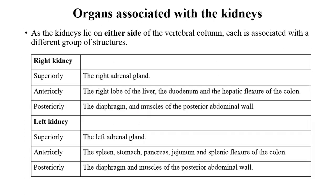Organs associated with the kidney: the kidney is present on either side of the vertebral column. Superiorly, both the right and left kidneys have an adrenal gland at the uppermost part. From the right kidney anteriorly, there is the right lobe of the liver, duodenum, and the hepatic flexure of the colon. From the posterior side of the kidney there is the diaphragm and the muscles of the posterior abdominal wall — the psoas muscles.